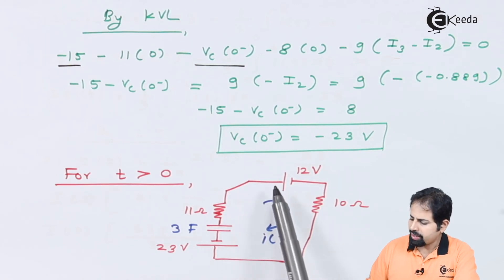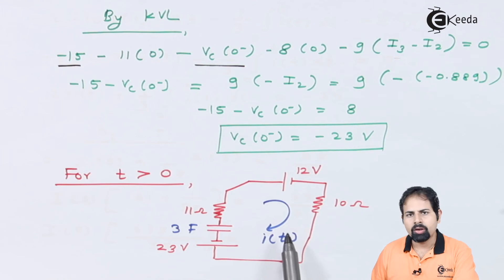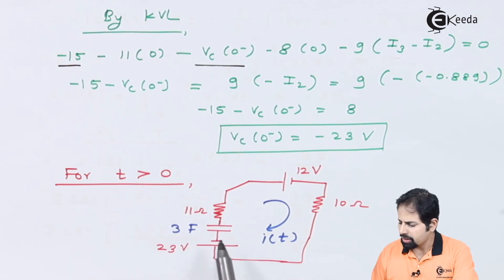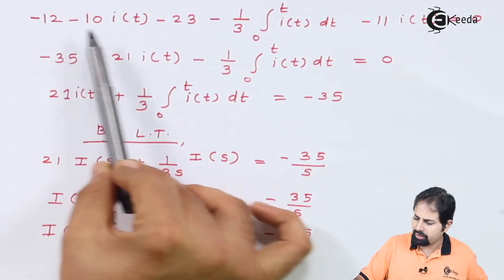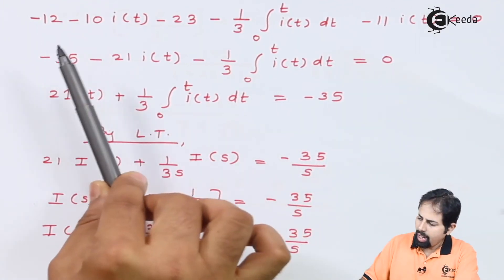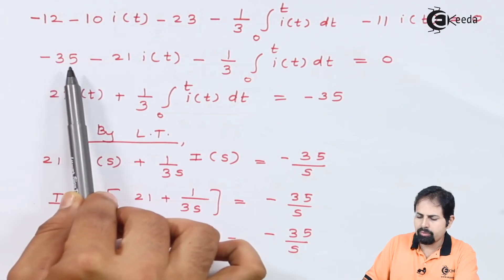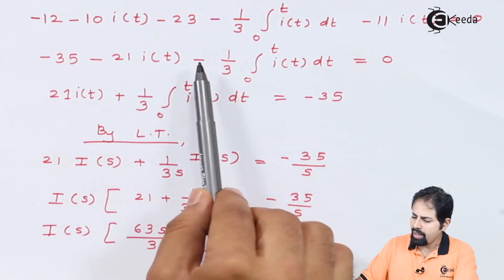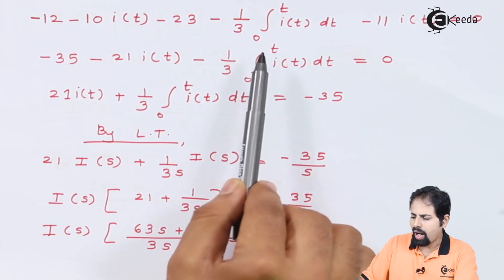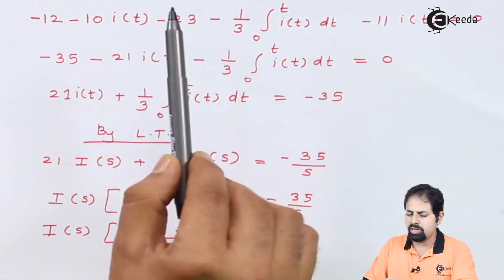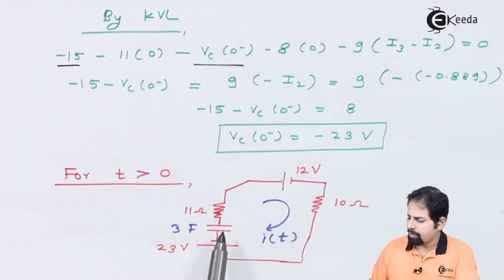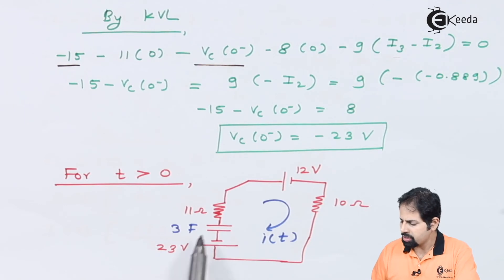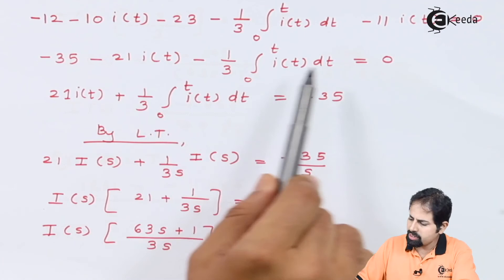So for this circuit, when I again apply KVL, what I shall get: minus 12, minus 10 into i(t), then again minus 23, then voltage across capacitor will be minus 1 upon 3, integration of i(t) into dt, and minus 11 into i(t). So that equation I have written here which you can check. And then minus 12 and minus 23 has been combined to give me 35. Then this 10 into i(t) and 11 into i(t) has been combined to give 21 into i(t). And then it is minus 1 by 3 into 0 to T. Why is it 0 to T? Because I have already written its initial value. See, for this capacitor I am writing from 0 to T because initial voltage has been written separately, which is 23 volts. And so this is the equation which I will get.